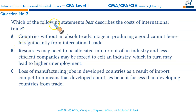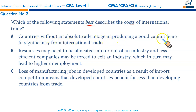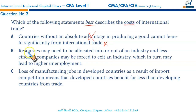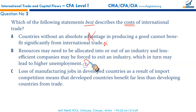Next question: which of the following statements best describes the costs of international trade? Option A states that countries without an absolute advantage cannot benefit significantly — this is incorrect, because comparative advantage is what matters, not absolute advantage. Option B states that less efficient companies may be forced to exit an industry, which may lead to higher unemployment. This is a disadvantage and a cost of international trade — this is true.